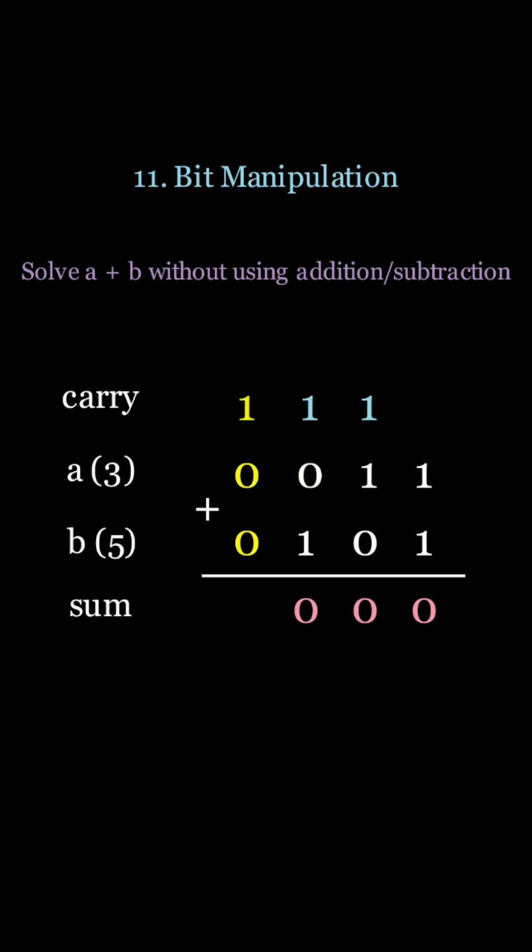And finally, 1 plus 0 plus 0 is just 1, so we just carry it to the sum. Some observations that you'll note over here is that the sum is the XOR operator and the carry is the AND operator shifted by 1 to the left.